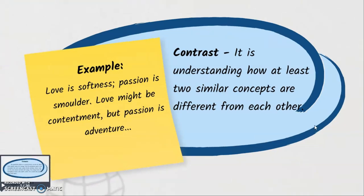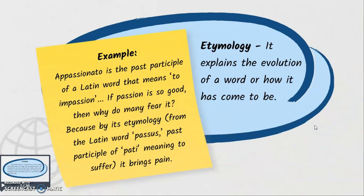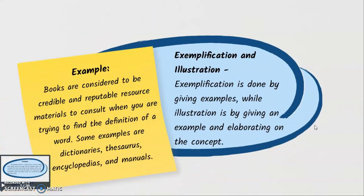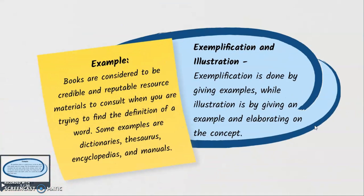The next technique is etymology. It explains the evolution of a word or how it has come to be. As seen in the given example, it tells about the evolution and where the word 'passion' came from. The next technique is exemplification and illustration. Exemplification is done by giving examples, while illustration is by giving an example and elaborating on the concept, just like what is stated in the given example.